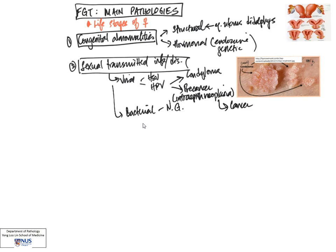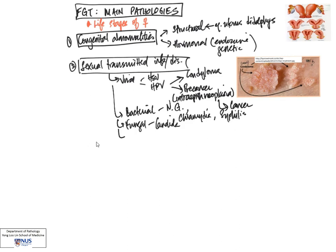There can also be bacterial infections, and some examples of organisms would be Neisseria gonorrhea, chlamydia, and also Treponema pallidum, which causes syphilis — this is very rare nowadays. Candida is an example of a fungal organism that can give rise to sexually transmitted infections, and Trichomonas is an example of a protozoal parasite.